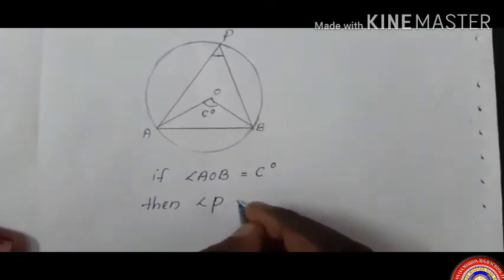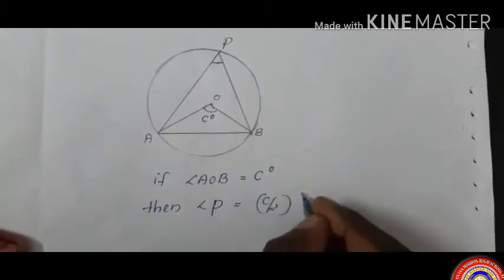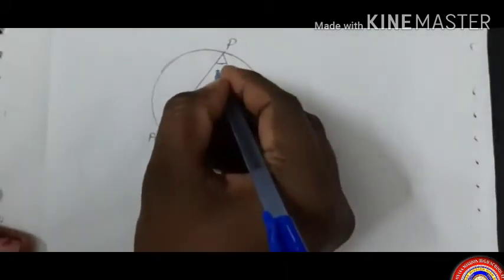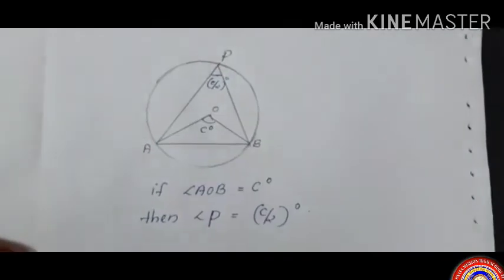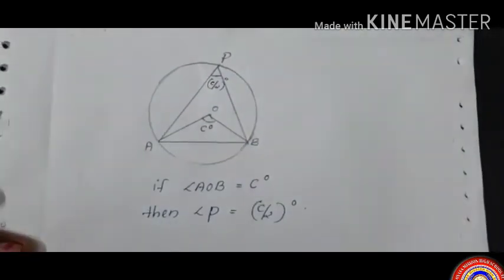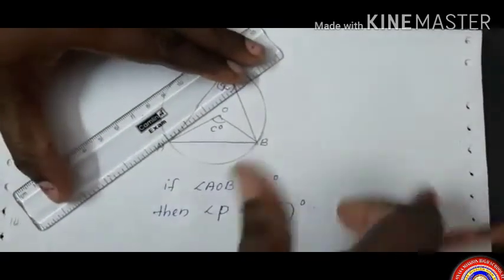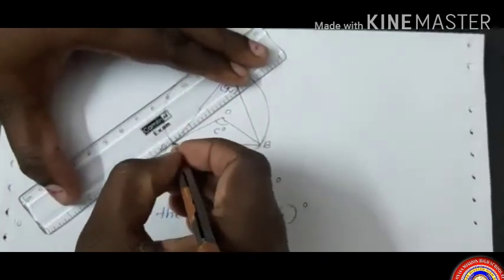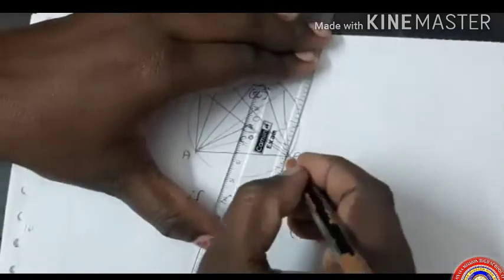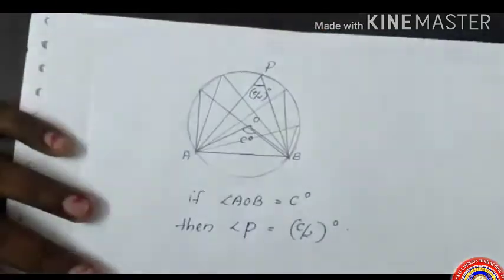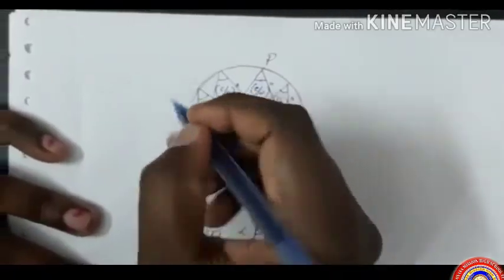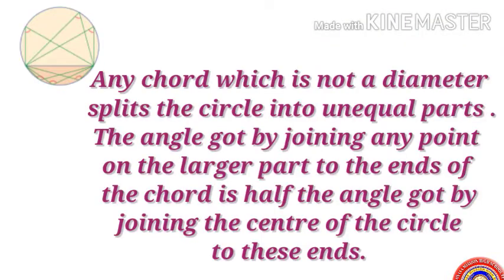The angle formed at P equals C/2 degrees, half of the central angle. If we change the position of P anywhere above the chord AB on the circle, we get all angles equal to C/2 degrees.